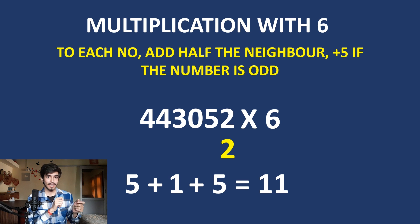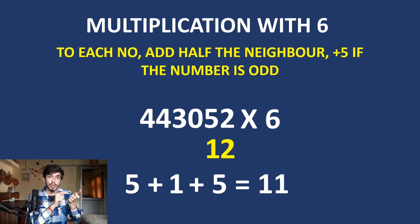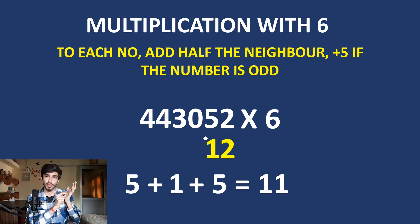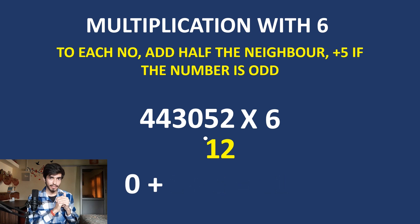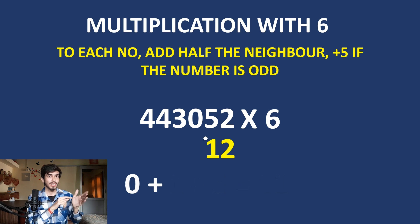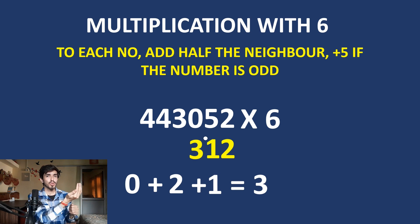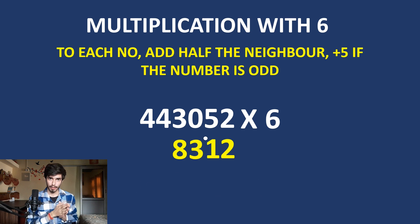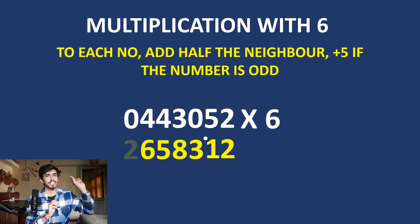For carries in the Trachtenberg system, when you get 11, you write 1 and put a dot in front of the digit to remember there is a carry — no need to write the carry digit somewhere else. Moving to 0: it is even, add half of the neighbor; half of 5 is 2, plus the carry of 1 is 3. What you need for this calculation is just the key and basic counting.